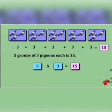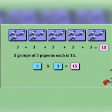Now let us look at this example. We have 5 groups, and each group has 3 pigeons in it. So if we want to add the total number of pigeons, we will add 3 five times, as there are 5 groups and each group has 3 pigeons. So if we add 3 five times, we get the answer as 15.